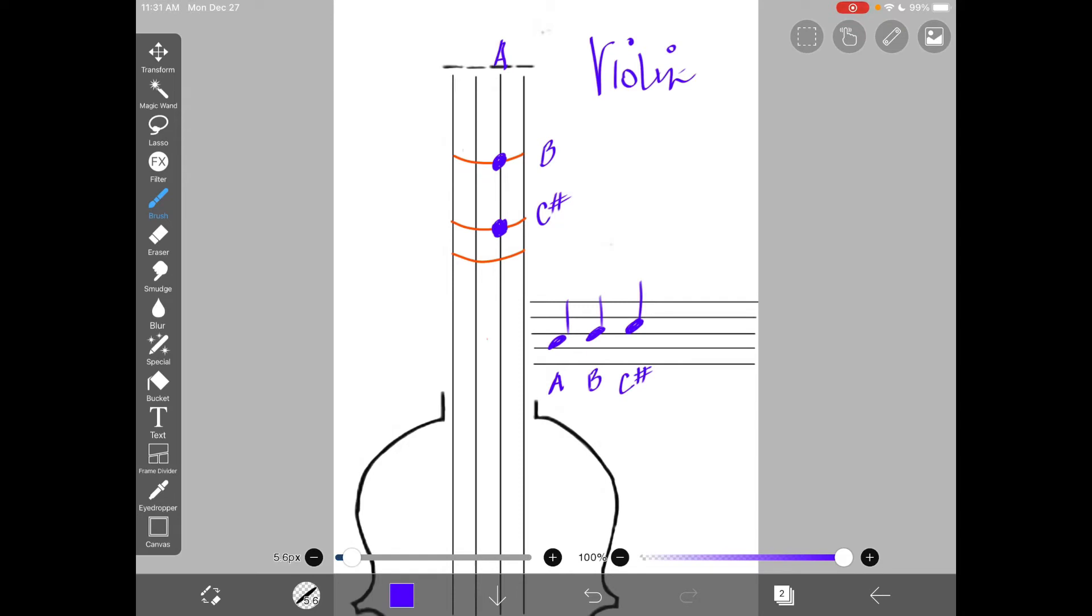So we have A, B, C. Next is D. Now, this is not the open D. This is a high D. This D is played with the third finger on the A string.